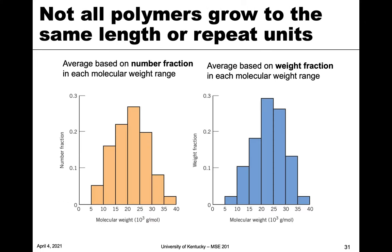Not all polymers will grow to the same length or number of repeat units, so we have this distribution. We need to look at that distribution in two ways: we can look at the average molecular weight based on a number fraction — how many chains are in each bin of molecular weights.